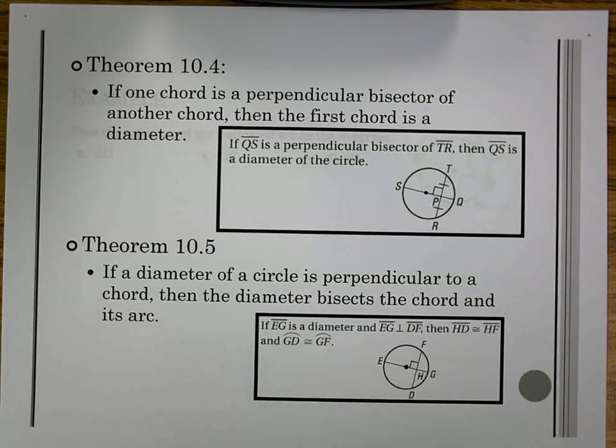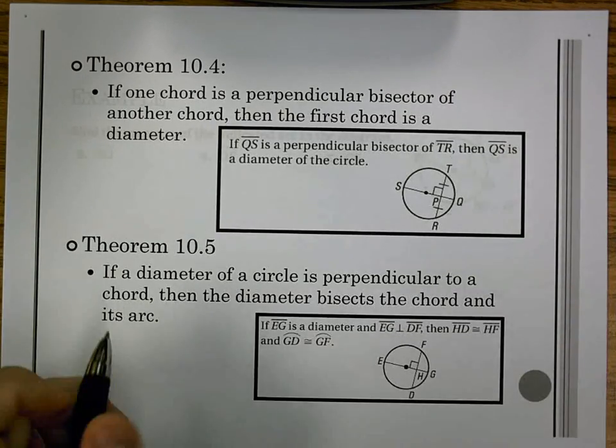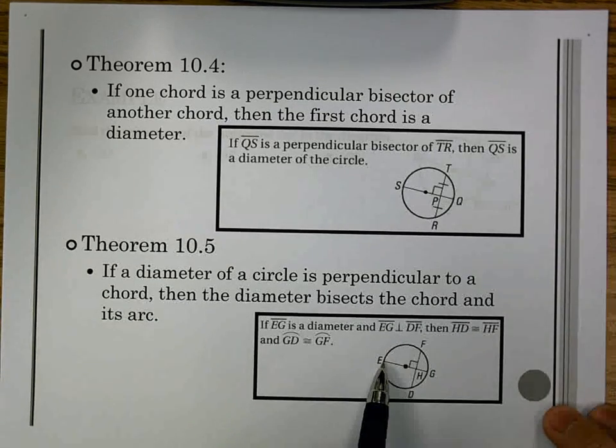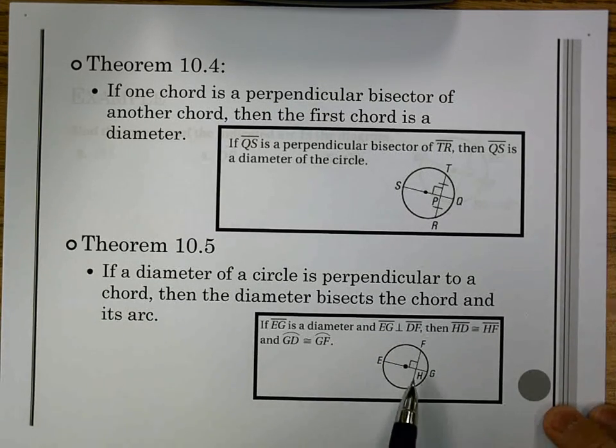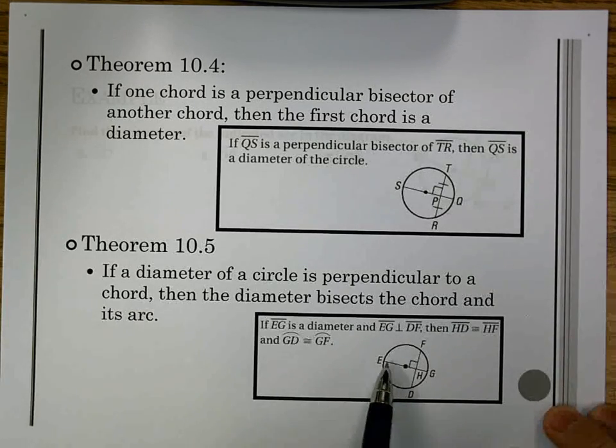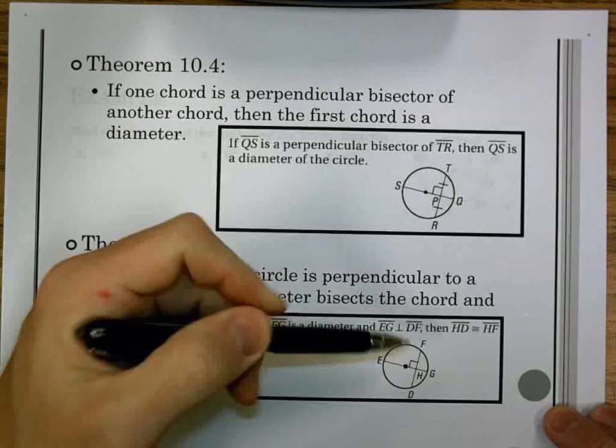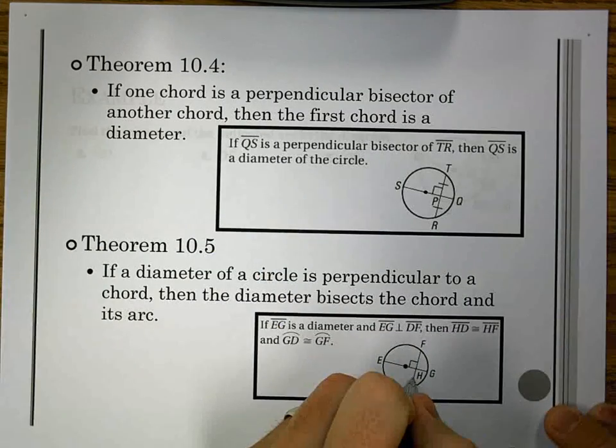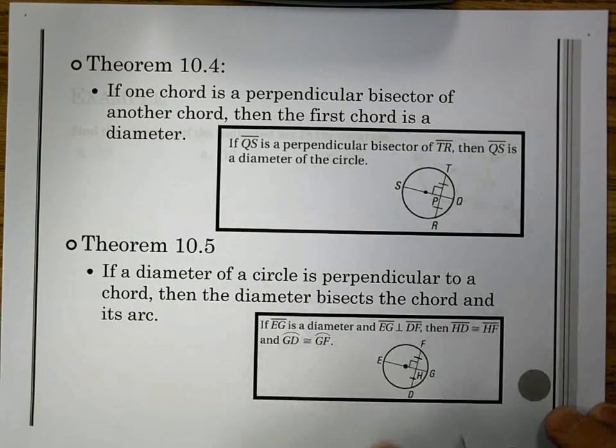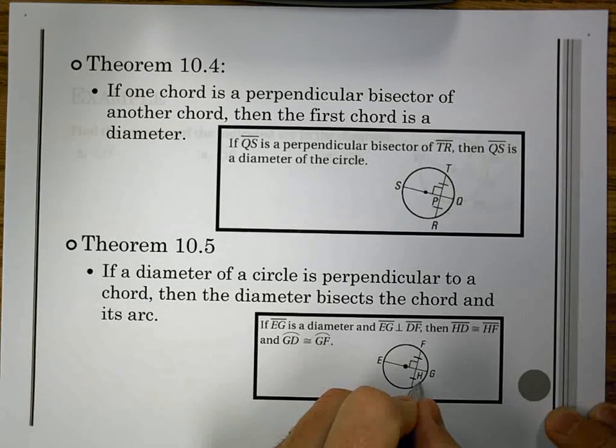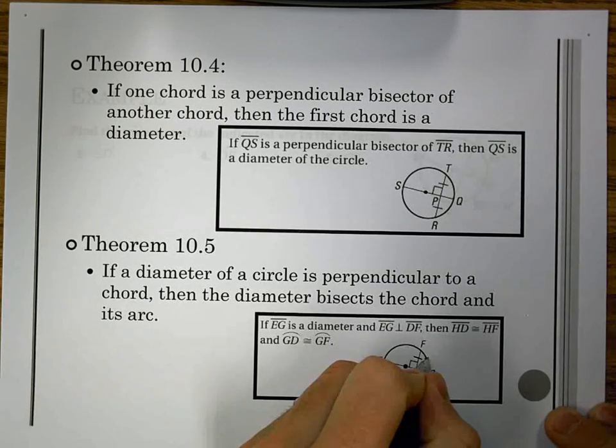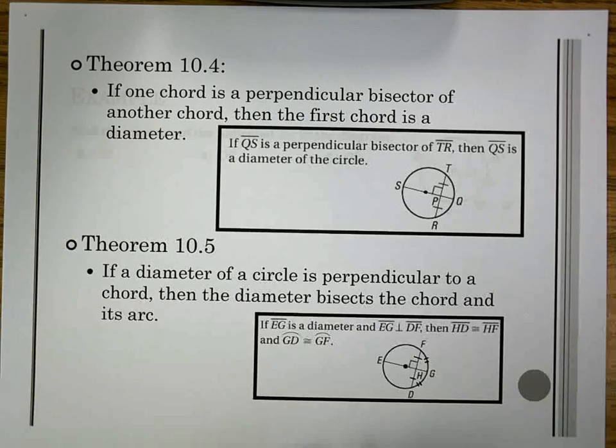The other theorem is kind of the converse of it, reverse idea. If the diameter of a circle is perpendicular to a chord, then the diameter bisects the chord and its arc. So now it's saying if EG is a diameter and it's perpendicular to DF, then we know that HD and HF are the same, and we know that GD and GF are also the same. Again, we don't typically mark arcs congruent like that, but just for the sake of getting this understanding, we'll do that.